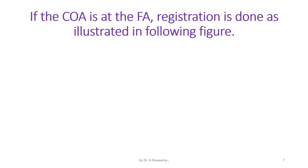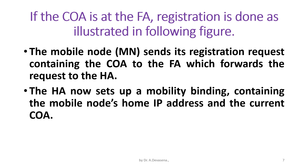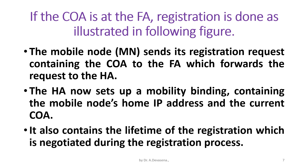If the care of address (COA) is at the foreign agent, registration is done as illustrated in the following figure. The mobile node sends its registration request containing the COA to the foreign agent (FA), which forwards the request to the home agent (HA). The HA sets up a mobility binding containing the mobile node's home IP address and the current COA. It also contains the lifetime of the registration, which is negotiated during the registration process.